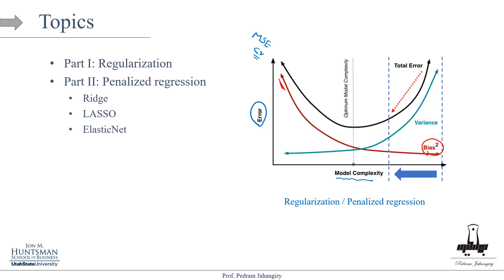If you run the model for another realization of the data, the model variance is going to be large. So yes — more complex model means bias decreases but variance increases. At some point we're making the model unnecessarily complex: the bias is decreasing but the variance is increasing a lot more. Regularization targets this problem by saying: let's make the model a little less complex, in the hope that the variance of the model will decrease a lot.